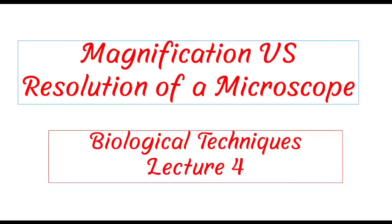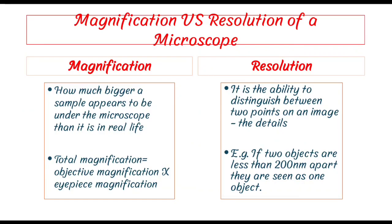What is the difference between magnification and resolution of a microscope? The microscope helps us to magnify the image. Magnification is the ability of any microscope to show an image larger than its actual, real size — the microscope shows the image bigger than its real life.